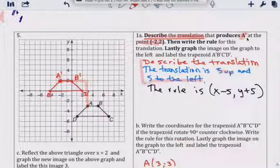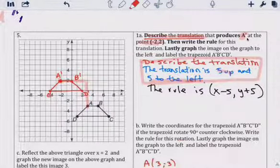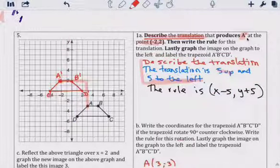That's a translation. This is describing it. Then writing the rule because it went left. It went left, it's a minus 5 on the X and up. Up is the Y line. So it's a plus 5. That's the rule for that.